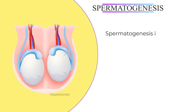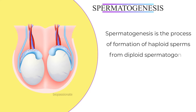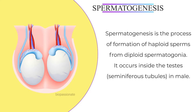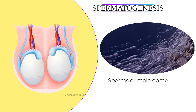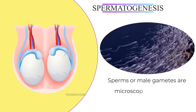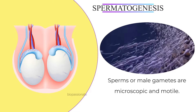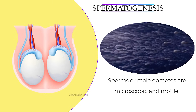Spermatogenesis is the formation of haploid sperms from diploid spermatogonia. Spermatogenesis occurs inside the testes in the male. Sperms are male gametes which are microscopic and motile.